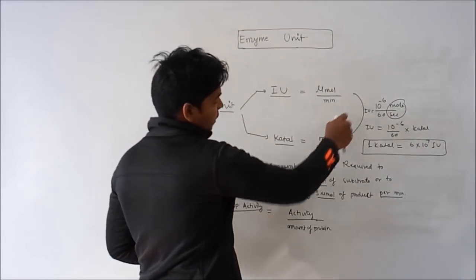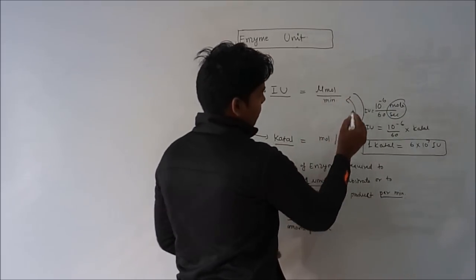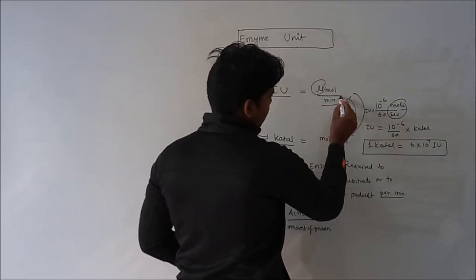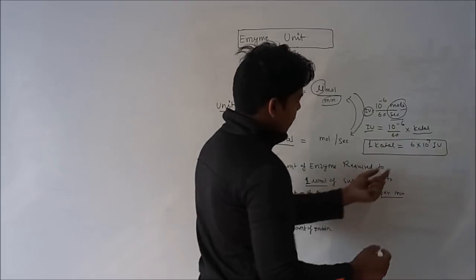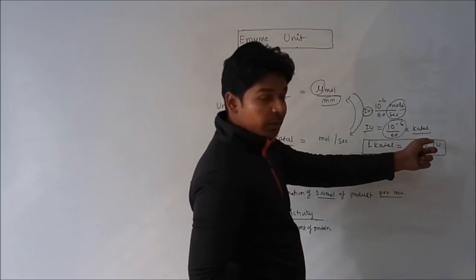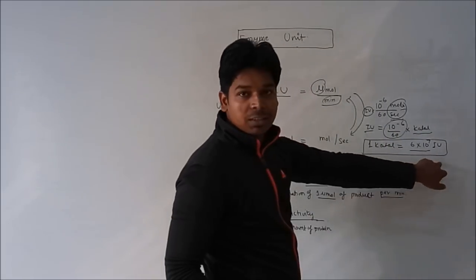You can convert international unit into katal or katal into international unit by this: just convert micromole into mole and minute into second. You will get the international unit relation with katal. One international unit is 10 to the power minus 6 divided by 60 into katal, and one katal is equal to 6 into 10 to the power 7 international unit.